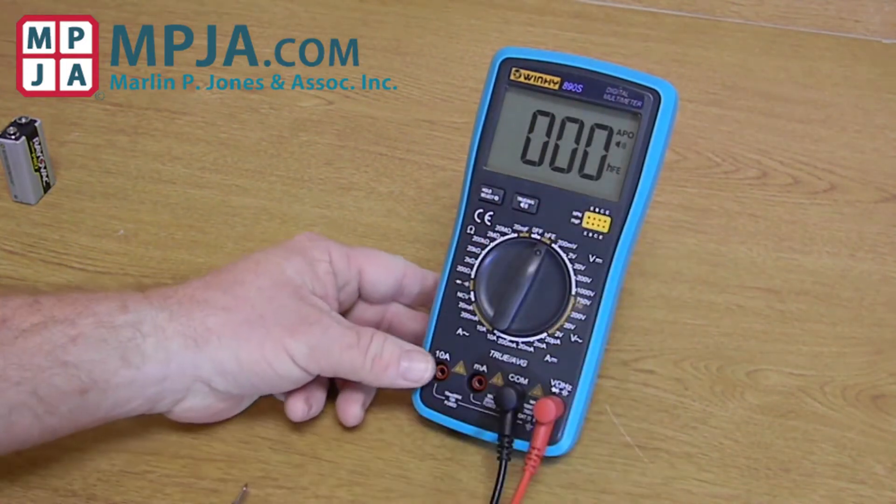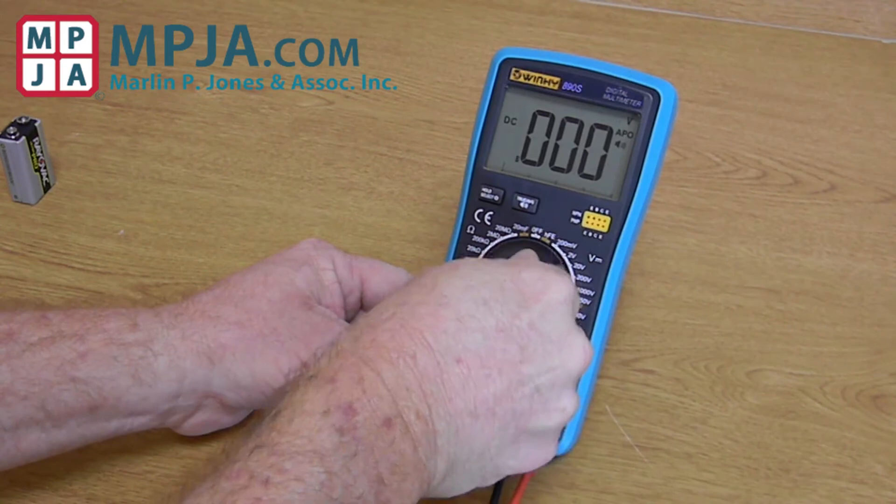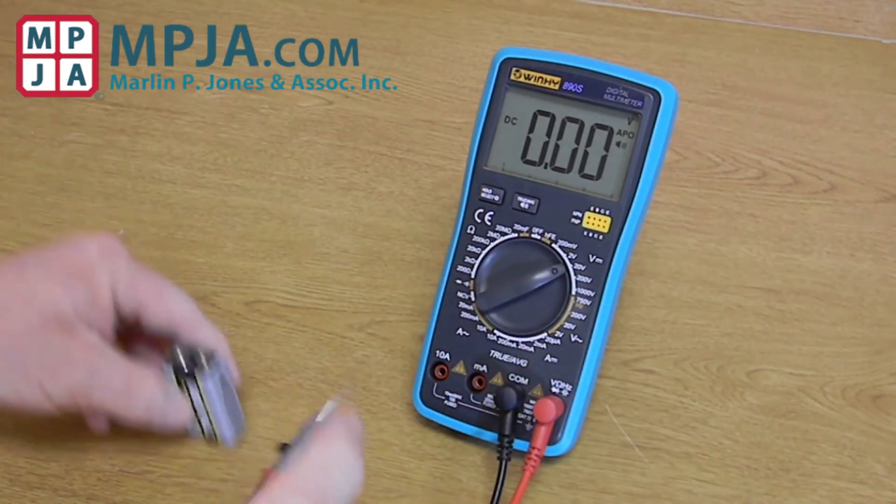Then we move on to the DC voltage section. Try a nice little test, a little 9 volt battery.